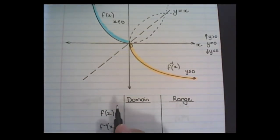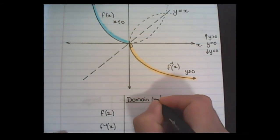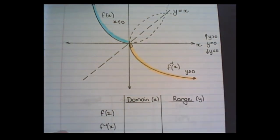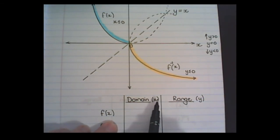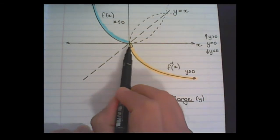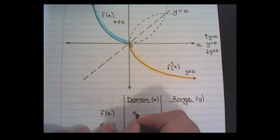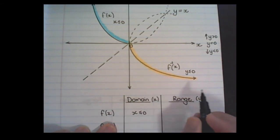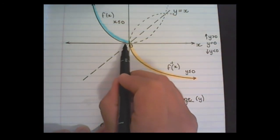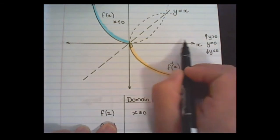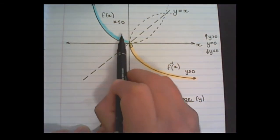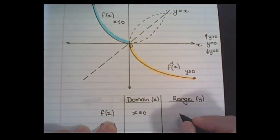With the restriction on f(x), we can also discuss its domain and range. Remember, the domain is the x values and the range is the y values. For f(x), the domain — with the restriction, that's only the blue part — is x smaller or equal to 0. And the values of y: in the blue graph, all y values are either equal to 0 or above the x-axis, so y is bigger or equal to 0.